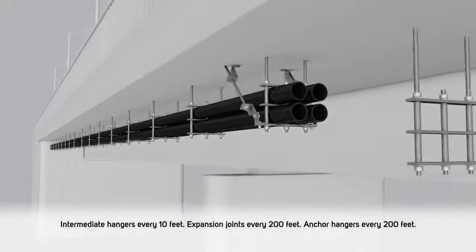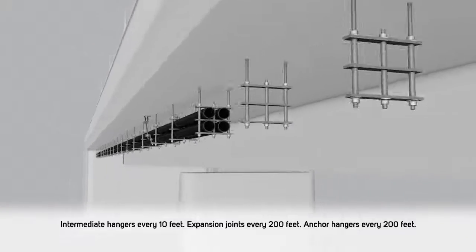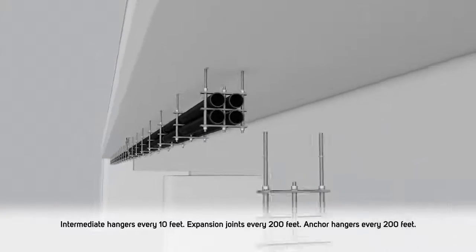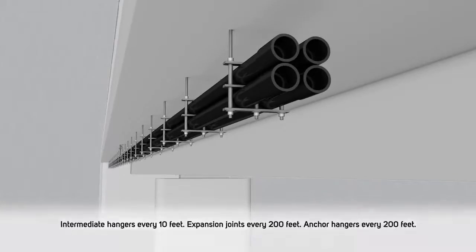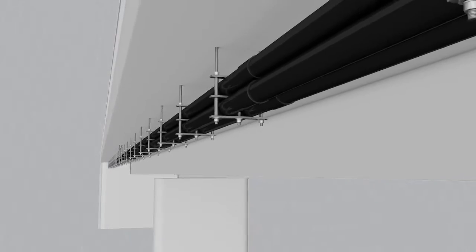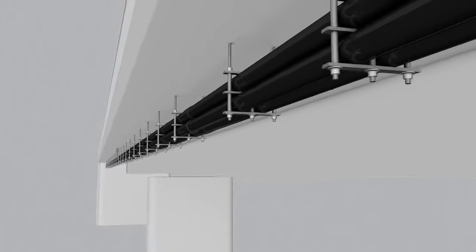Continue installing intermediate hangers and conduit for the next 100 feet before installing the next expansion joint. The process continues for the balance of the bridge length until the next pull box or abutment is reached.